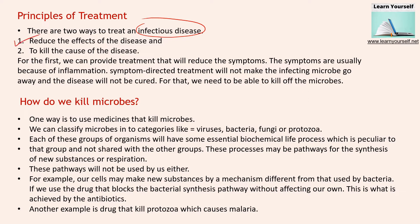First, to reduce the effects of disease, and second, to kill the cause of disease. Reducing the effect of disease means symptomatic relief, while killing the cause means controlling the microbial count. For the first, we can provide treatment that will reduce the symptoms — symptomatic relief through medicine. For example, if we have a common cold with a runny nose, we take a medicine that stops the runny nose. That is symptomatic relief — it only cures the symptom, not the microbes.